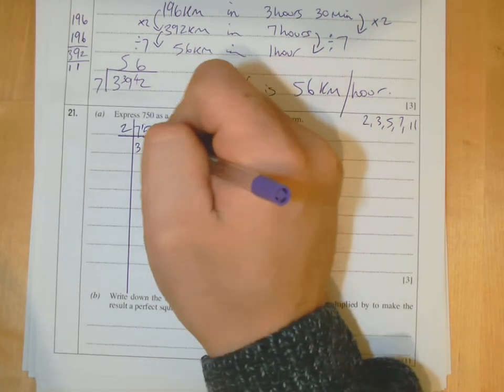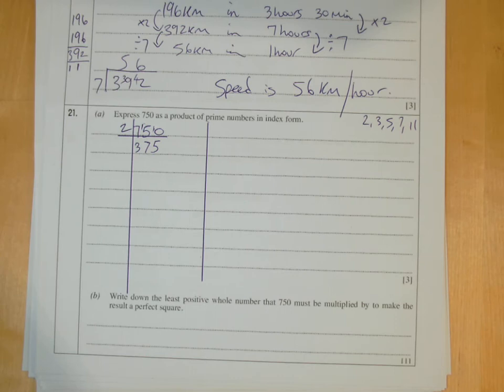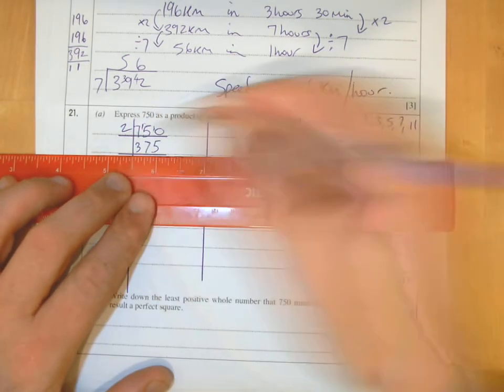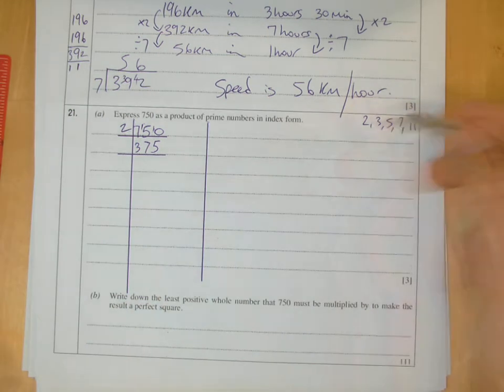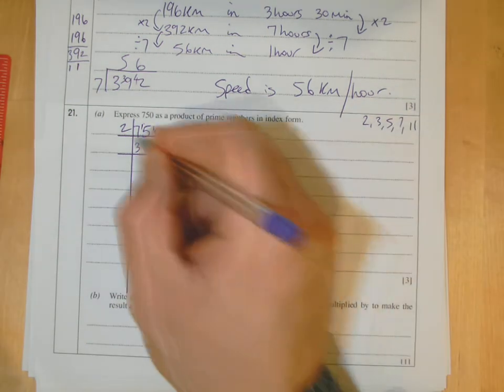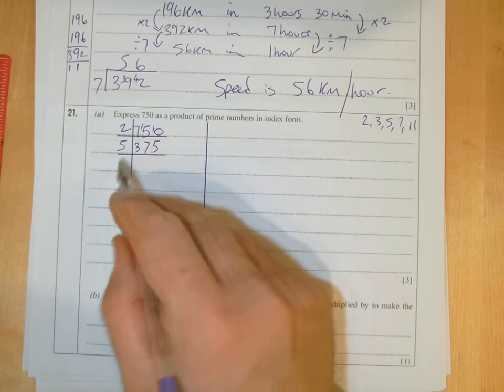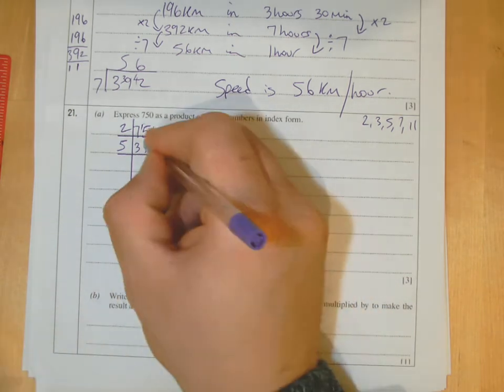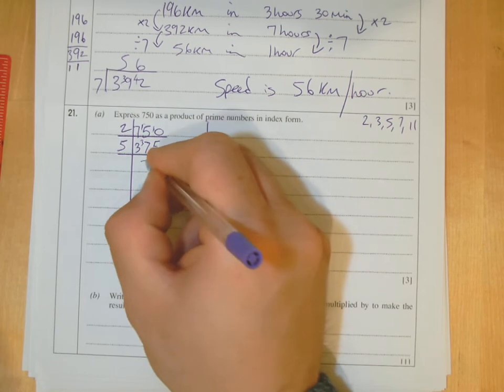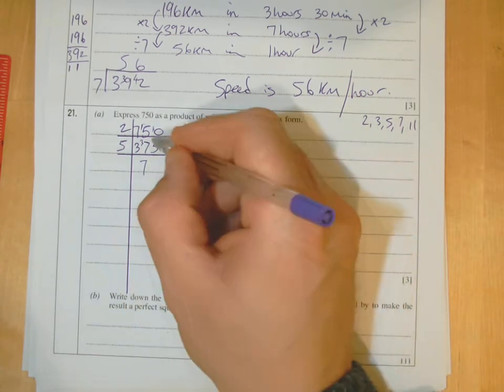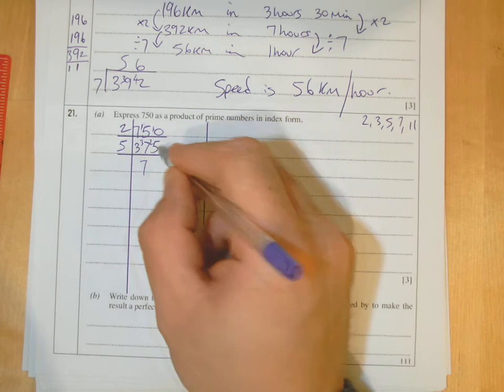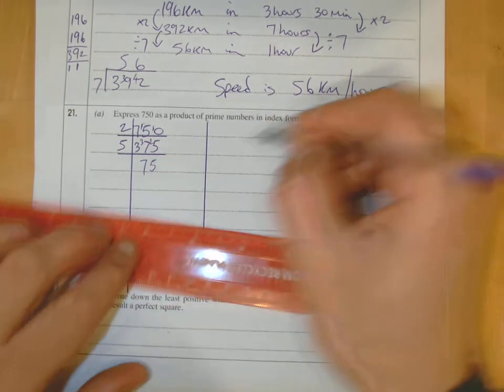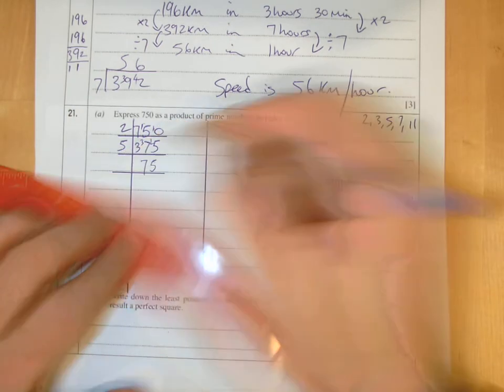Then I'm left with that number and now I've got to look what prime number goes into here. I'm not thinking 2 anymore because it's odd, I'm thinking 5. 5 into 37 doesn't go into 3, so 5 into 37 goes 7 times, and 7 times 5 is 35 so there's a remainder of 2. 5 into 25 goes 5 times.